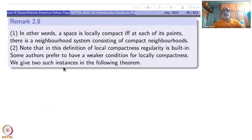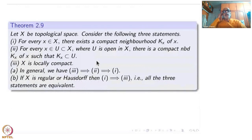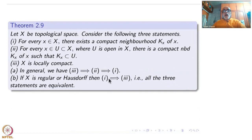There are many others, but I cannot deal with all of them; these two are quite important. In a theorem, starting with a topological space, consider three conditions. The conclusion is that condition 3 implies condition 2 implies condition 1. If X is regular or Hausdorff, then all three are equivalent — condition 1 implies condition 3, so all are equalized under regularity or Hausdorffness.